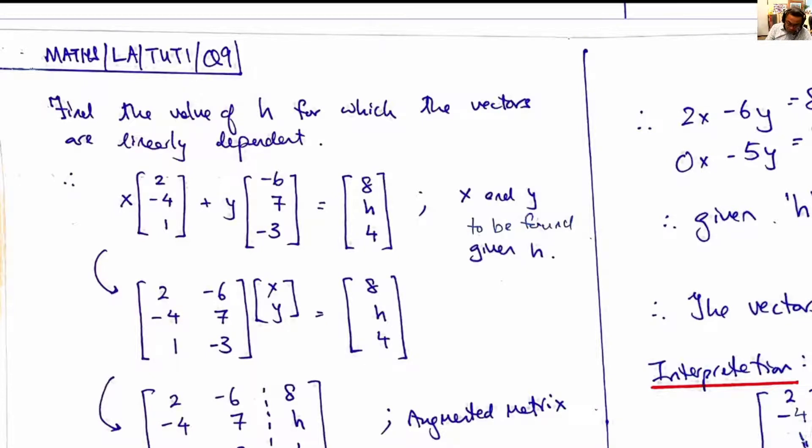This is tutorial 1, question 9. We are asked to find the variable h such that the vectors are linearly dependent.